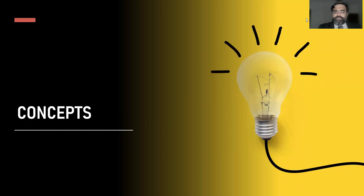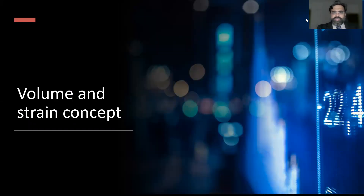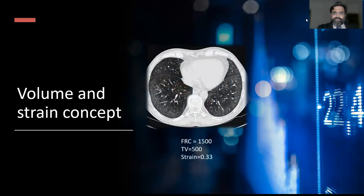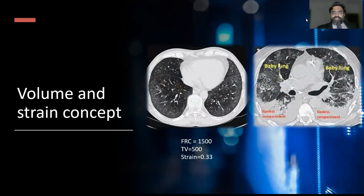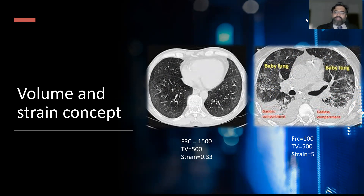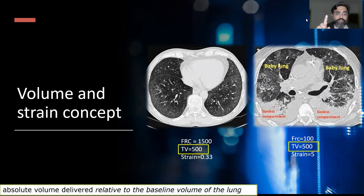Let's discuss the volume and strain concept. Consider a lung with an FRC of 1500 mL and a tidal volume of 500 mL — the strain is 0.33. Now consider the ARDS lung with a gasless compartment and a so-called baby lung where FRC is only 100 mL. The strain — tidal volume divided by FRC — becomes 5, which is extremely high. It is therefore vital to understand the absolute volume delivered relative to the baseline lung volume. If the FRC is small and tidal volume remains the same, there is significant strain on the lung, which will cause ventilator-induced lung injury.